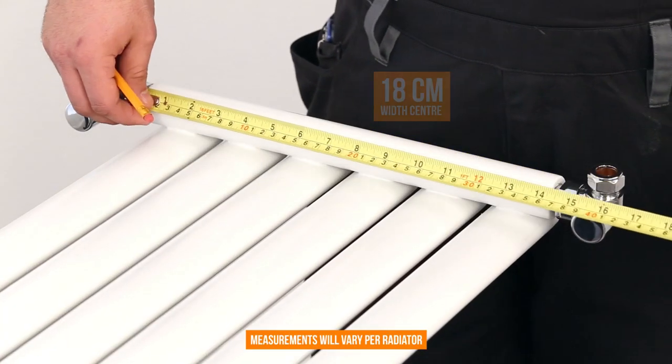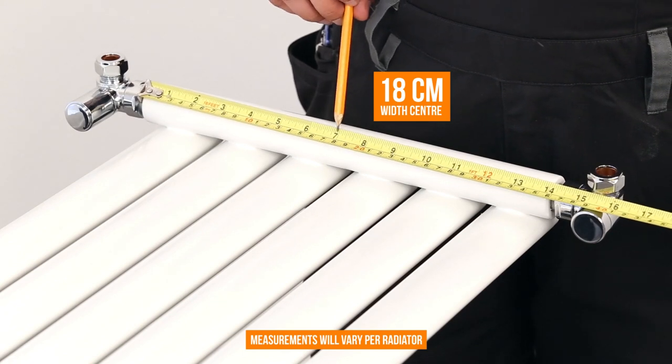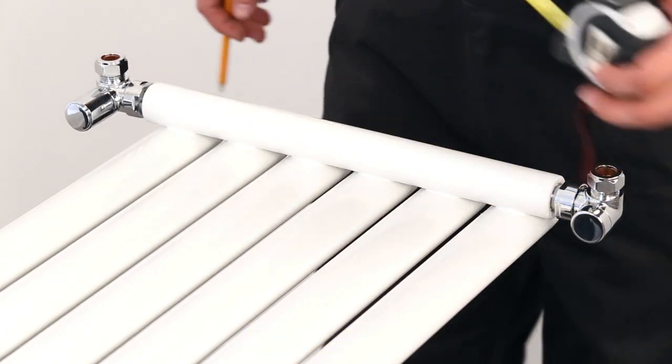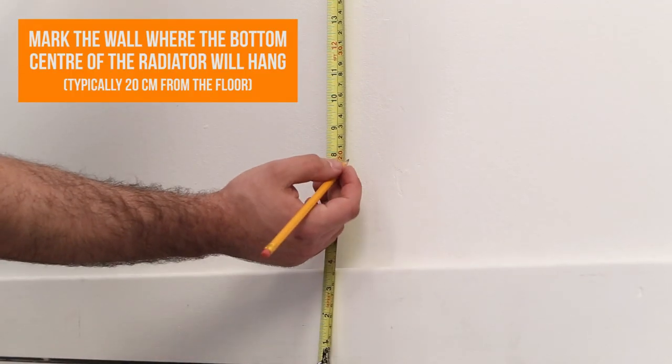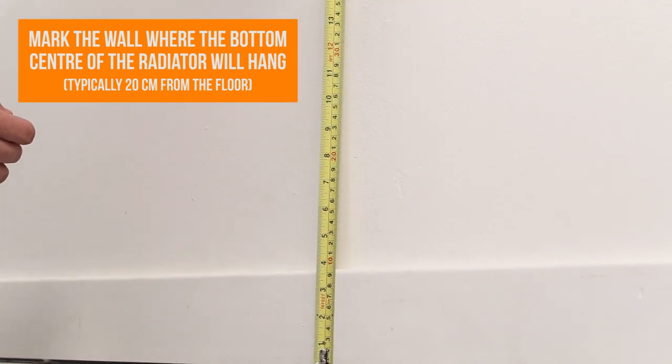Measure the width of the radiator to find the centre point. On the wall where you are going to place the radiator, measure the height at which you want the bottom centre of the radiator to hang. This could be defined by existing piping, skirting board or even just personal preference.